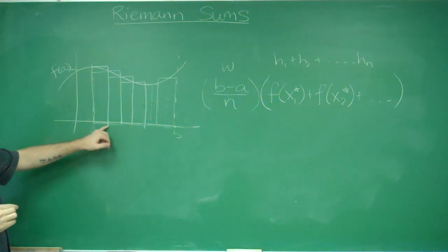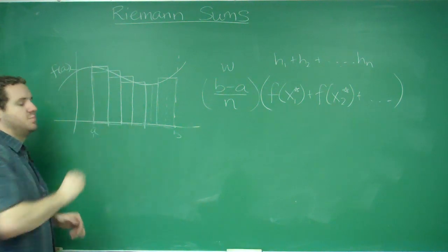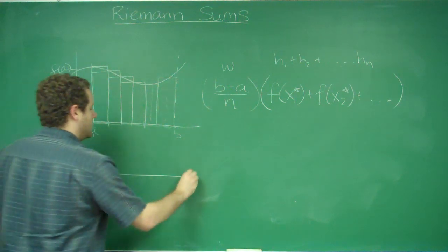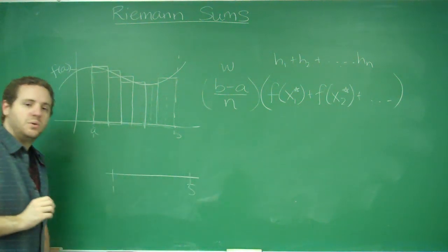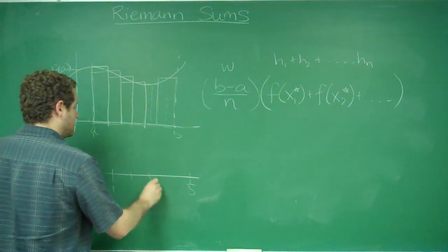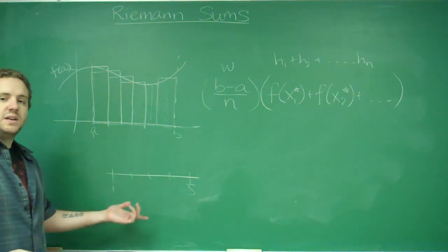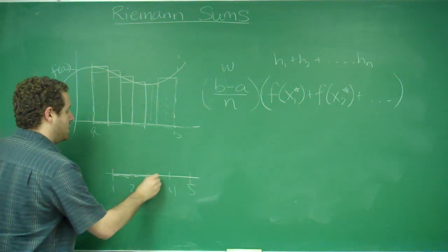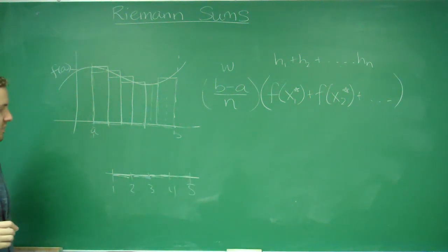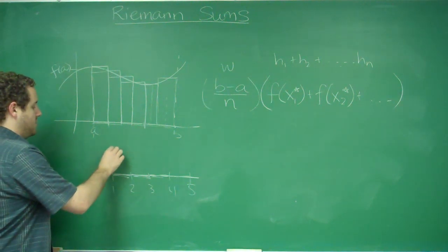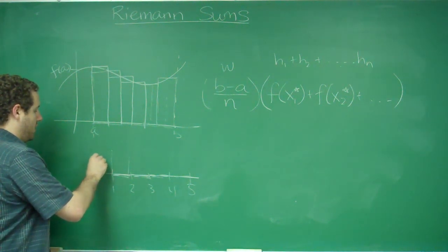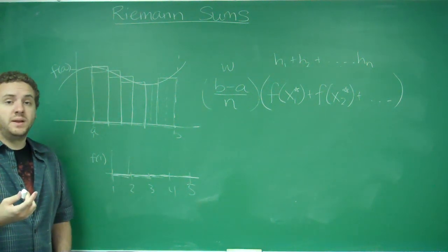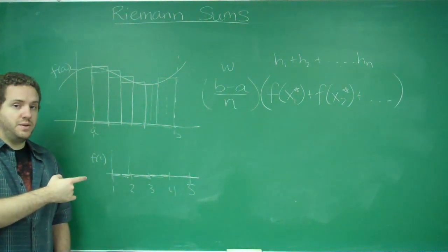If you had done right endpoint, you would have done whatever this next point was. So let me give you an example of a breakdown here. Let's say we were going from 1 to 5, and we were using 4 rectangles. You can see here the way that I split this up, our rectangles are exactly 1 unit wide every time. So for the first rectangle, if I was doing left endpoint, its height would be f of 1. But if I was doing right endpoint, its height would be f of 2. And if I were doing midpoint, its height would be f of 3 halves, right in the middle.